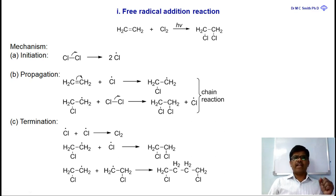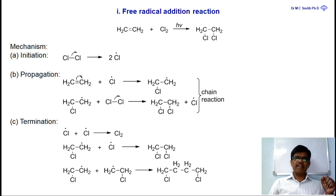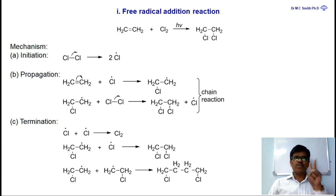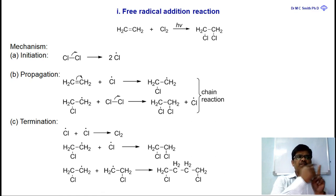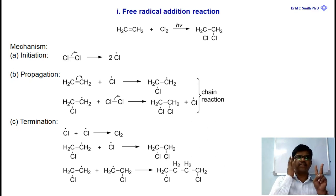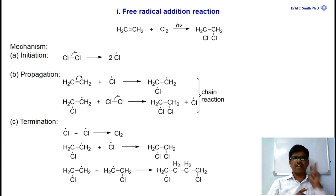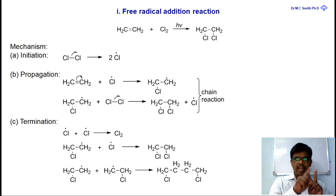Free radical addition reaction is a reaction where free radicals are added to a double bond — two free radicals are added. Always, addition reaction means two atoms or groups are added to the reactant. In free radical addition reaction, two free radicals are added. For example, two chlorine free radicals are added to the ethylene molecule.